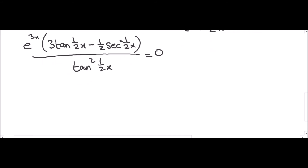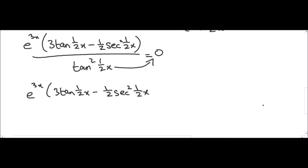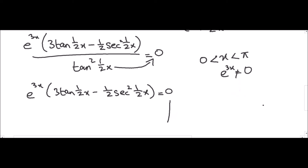Since the denominator tan²(½x) shifts over, we are left with e^(3x) · [3·tan(½x) minus ½·sec²(½x)] equals zero. Our range is 0 < x < π, so e^(3x) is never equal to zero. Therefore the only possible solution is: 3·tan(½x) minus ½·sec²(½x) equals zero.